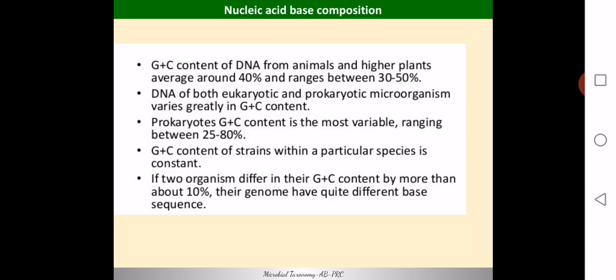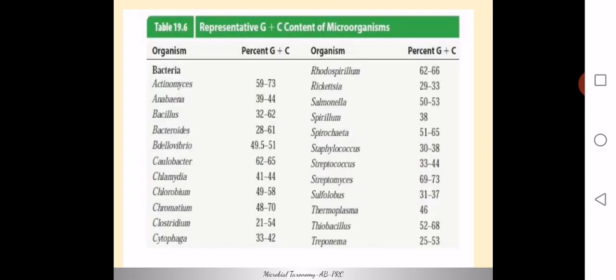The G+C content is different for different organisms; each species has a particular G+C content. In prokaryotes, G+C content is most variable, ranging from 25 to 80 percent. If two organisms differ by about 10 percent in G+C content, they are considered different organisms. For example, Bacillus has a G+C content of 32–62%, Clostridium 21–54%, and Salmonella 50–53%.